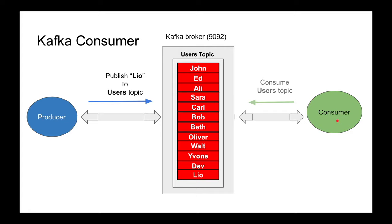What happens when a consumer says 'I want to consume the topic users'? If this is a brand new consumer, based on configuration it's going to read from position number zero, so it gets John first, then Ed, and so on. The consumer is polling for information — this is not a push model. The consumer just keeps asking for more, unlike RabbitMQ where the broker pushes information to the consumer.